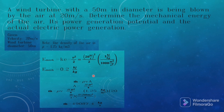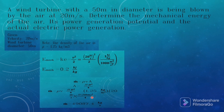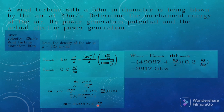To find the power generation potential, we first need the mass flow rate. Mass flow rate equals density multiplied by velocity multiplied by area, where area equals π × diameter² / 4. Substituting: 1.25 kg/m³ × 20 m/s × π × (50 m)² / 4, the mass flow rate equals 49,087.4 kg/s.